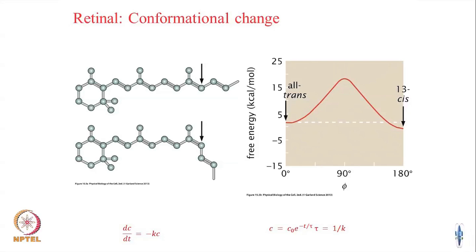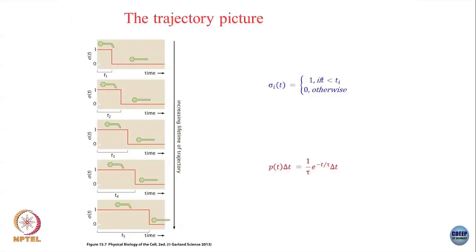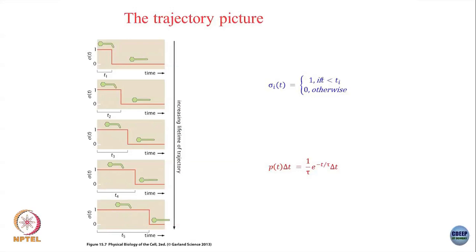This has a solution c = c₀ · e^(−t/τ), where τ, the characteristic time, is the inverse of the rate constant. You can think of this as a trajectory picture: you start from one conformation and at some random time it switches to the other conformation. If you repeat this experiment multiple times or look at multiple copies of this protein, the time at which it transforms from one state to the other is a random stochastic event. So at time t_i for the i-th copy of the protein it goes from 1 to 0 — that is the trajectory picture.